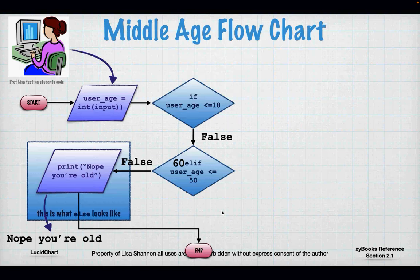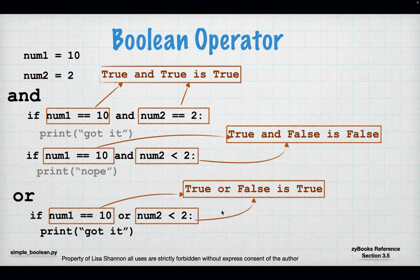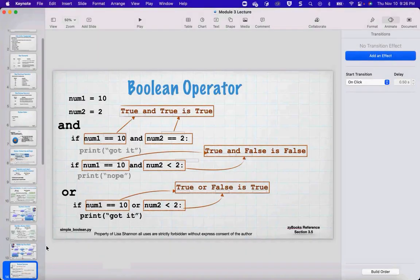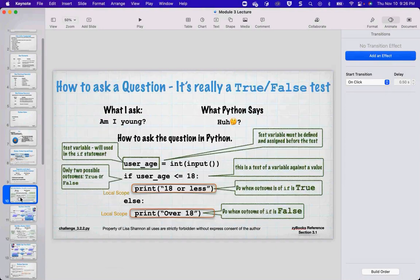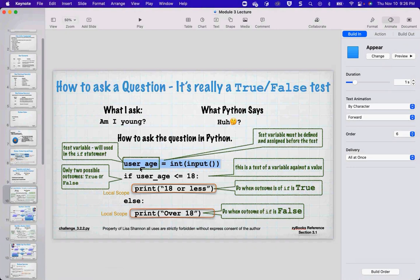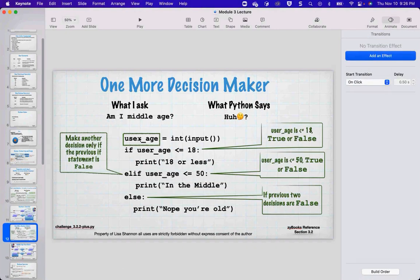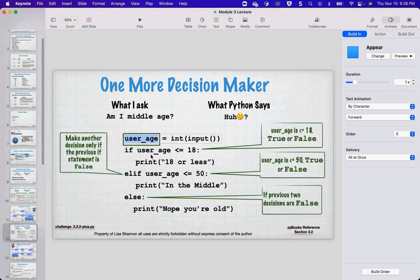That is how an elif statement works. The if, elif, and else have to be related — they all have to use the same test variable, user_age. That's how they're related. Let's go out into PyCharm and look at that middle-age example.